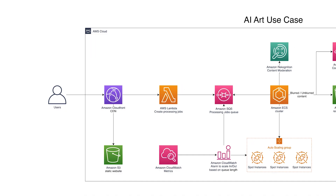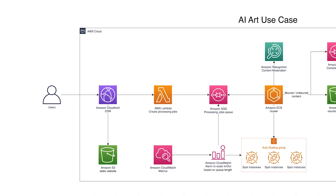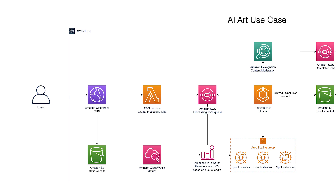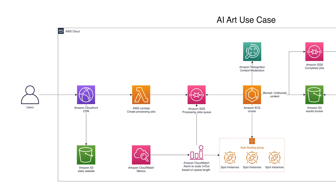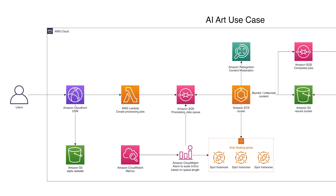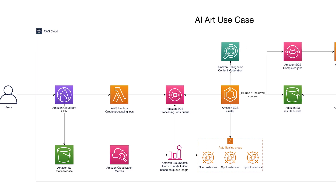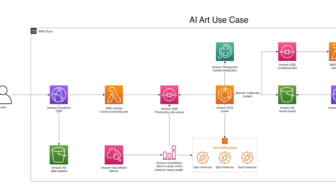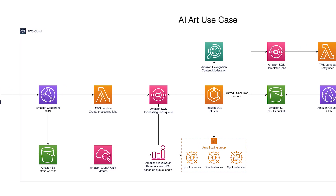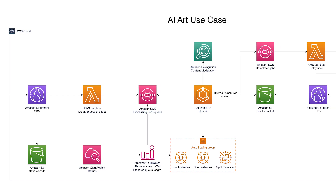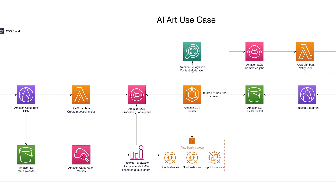It looks amazing. Can you introduce to me the architecture? How do you realize it on AWS? The user journey starts with them accessing our Lambda backend via browser interface, which is hosted on S3 and CloudFront, or via API. Then this request is being analyzed and sent to an incoming queue, which is being sent to Elastic Container Service.